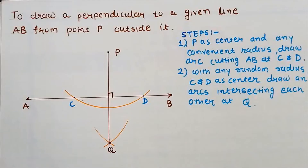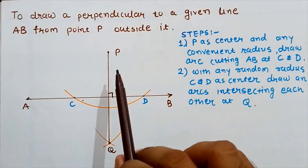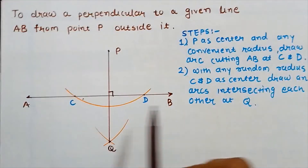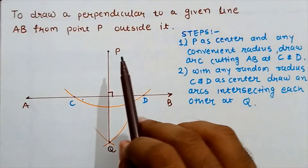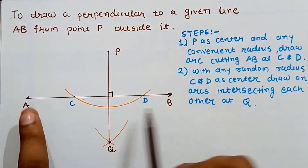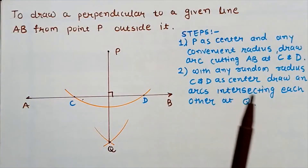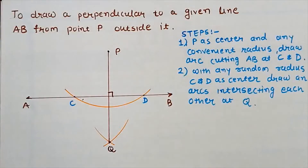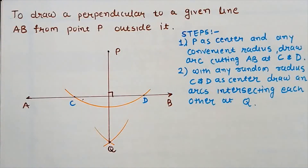I hope you understand how to draw a perpendicular to a given line from a point P outside it. Similarly, let's say the point P is nearer at the end of the line AB. In that case, we can draw the perpendicular using this second method.